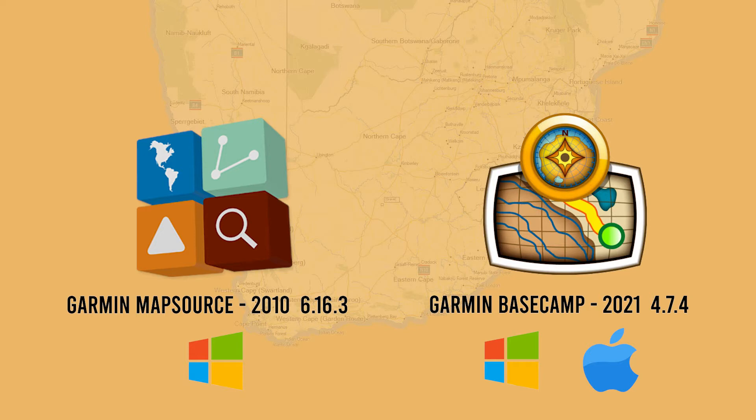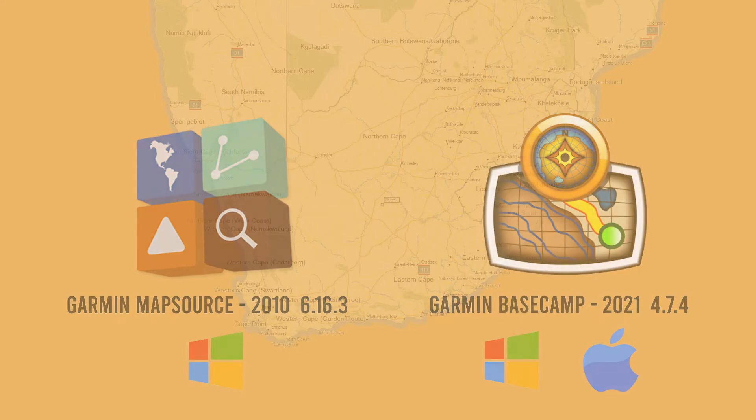If you have the older version, 5.1 for example, then 6.16.3 may still install, but there is no guarantee. You will find the link to Map Source 6.16.3 in the video description below.